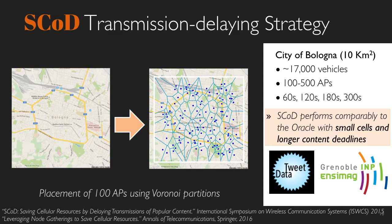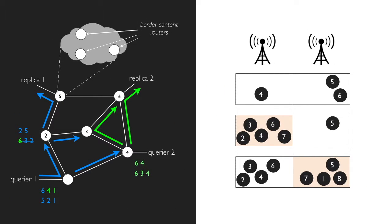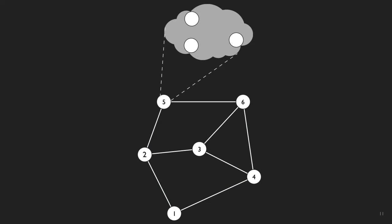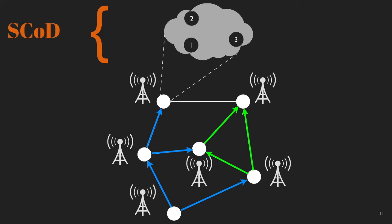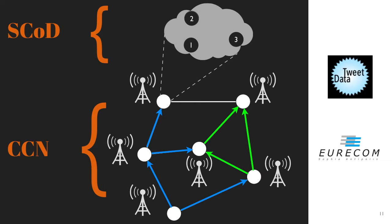SCOD was proposed in the framework of the national project DataTweet and was published with my colleagues at INPG in Grenoble. To conclude this first part of my presentation, I will present the research direction we are currently following. We are studying how to combine SCOD with our work on CCN. SCOD assumes the content to be available at the access points. To push the content, we are currently studying how our query-based scheme can be used in the core and metro-hall network. This work is a joint work with Eurocom in the south of France, in the framework of the national project DataTweet.